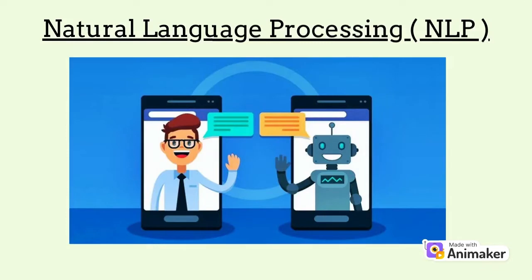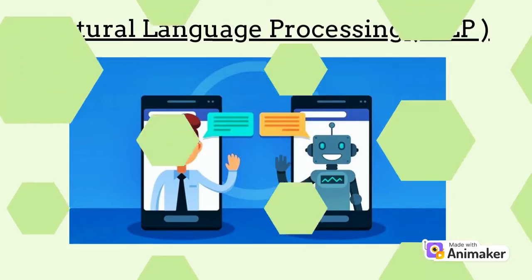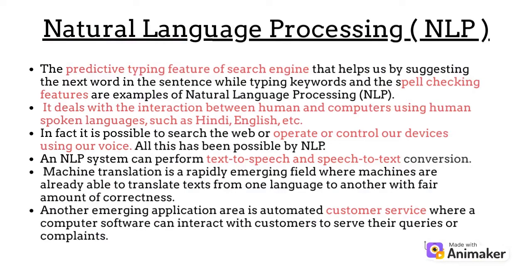Moving on to Natural Language Processing or NLP. The predictive typing features of search engines that help us by suggesting the next word in a sentence while typing keywords, and spell checking features, are examples of Natural Language Processing or NLP. It deals with the interaction between humans and computers while using human-spoken languages like Hindi, English and others. In fact, it is possible to search the web or operate or control our devices using our voice — all this is possible only because of NLP.